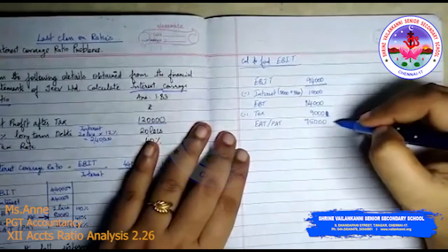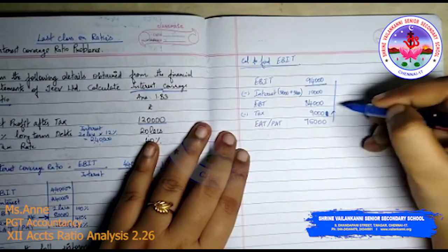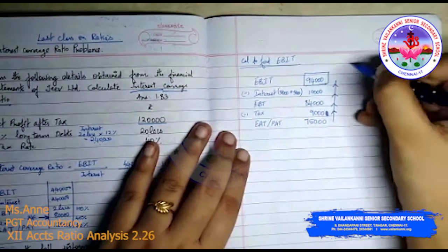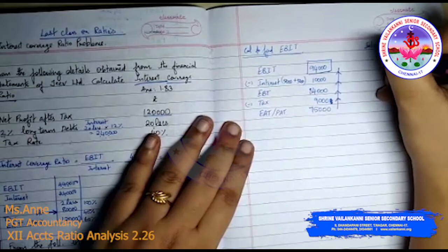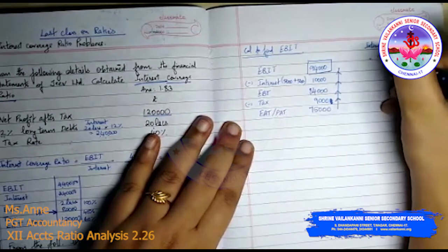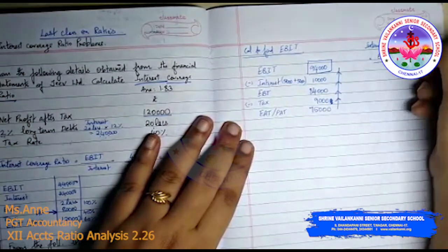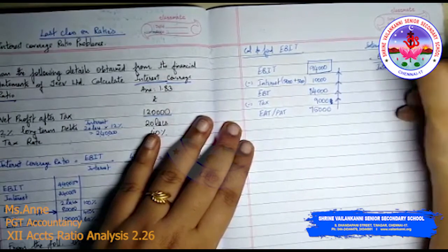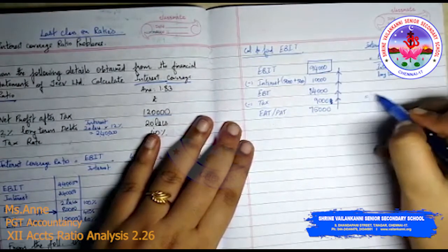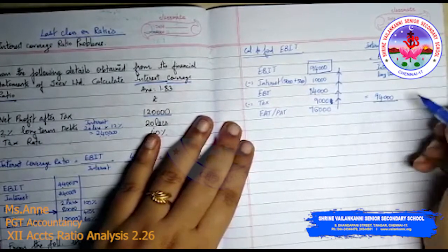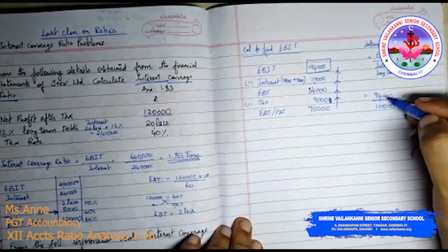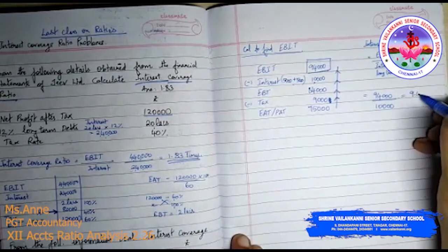We are just going in the reverse direction, step by step, to find earnings before interest and tax. The formula: interest coverage ratio equals earnings before interest and tax divided by interest on long term debts. Earnings before interest and tax is 94,000, interest is 10,000, so 94,000 divided by 10,000 is 9.4 times.